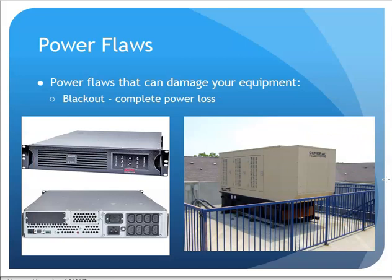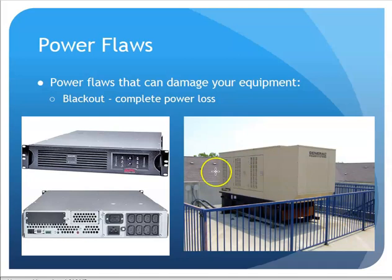A blackout is a complete loss of power — it can happen when a storm brings down a power line. A UPS battery backup unit can keep things running for a period of time — maybe just minutes or a half hour. Generators can handle a prolonged outage. If you have a short outage from a lightning strike where things shut off and quickly come back on, the battery can keep things running until power is restored.